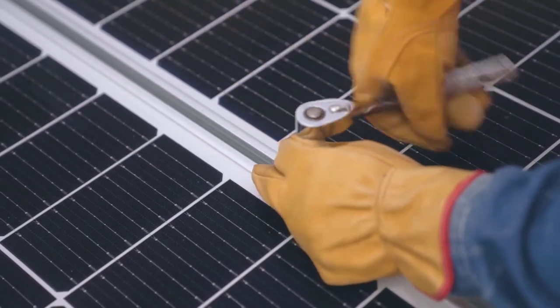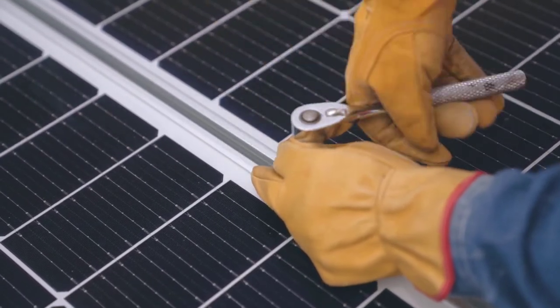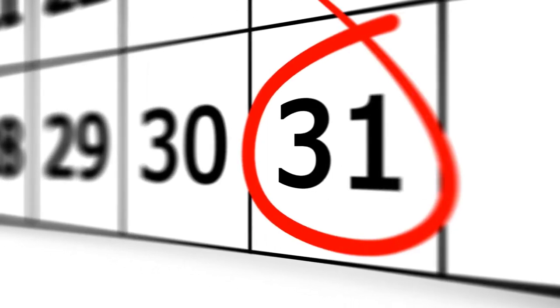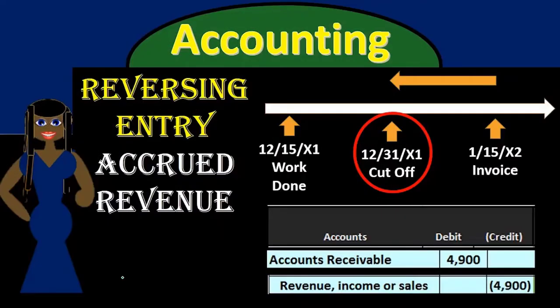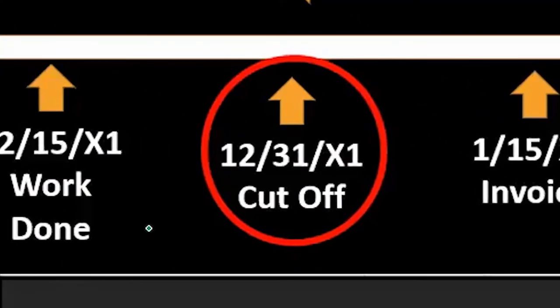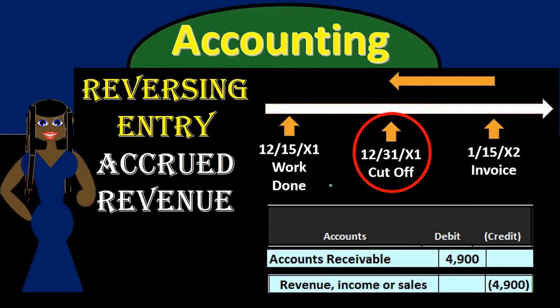The adjusting process happens after all the normal transactions for the month have occurred. Then at the end of the month we have that adjusting process — all journal entries being made as of the same date, the end of the month — in order to make the financial statements correct as of that point in time. In this case the end of the year, 12/31, is that cutoff date, the point in time that we make the financial statements.